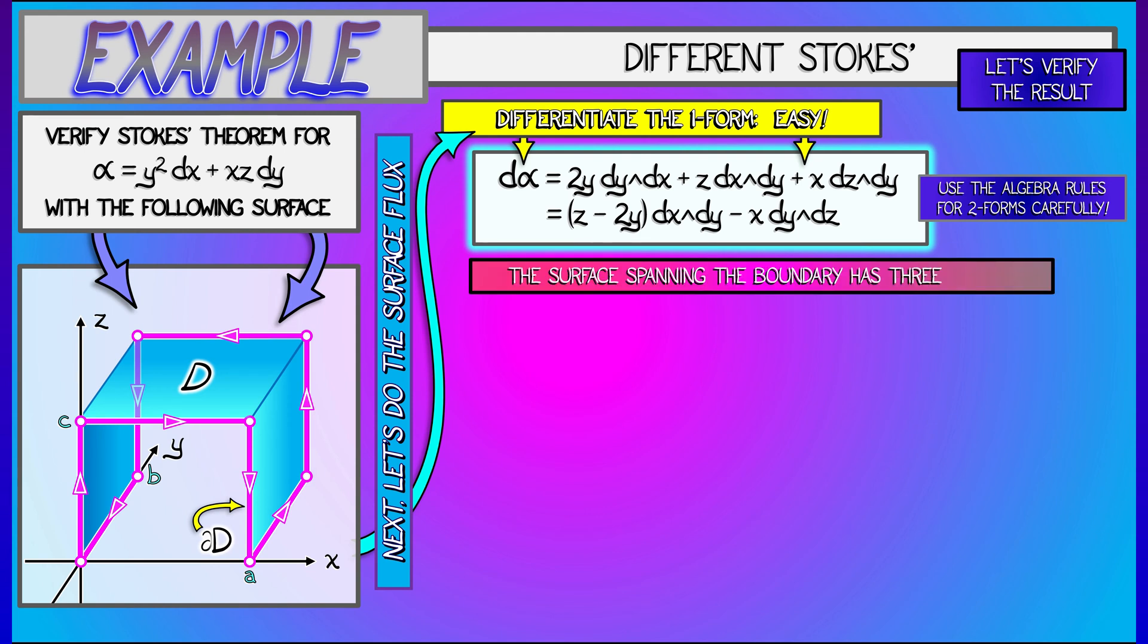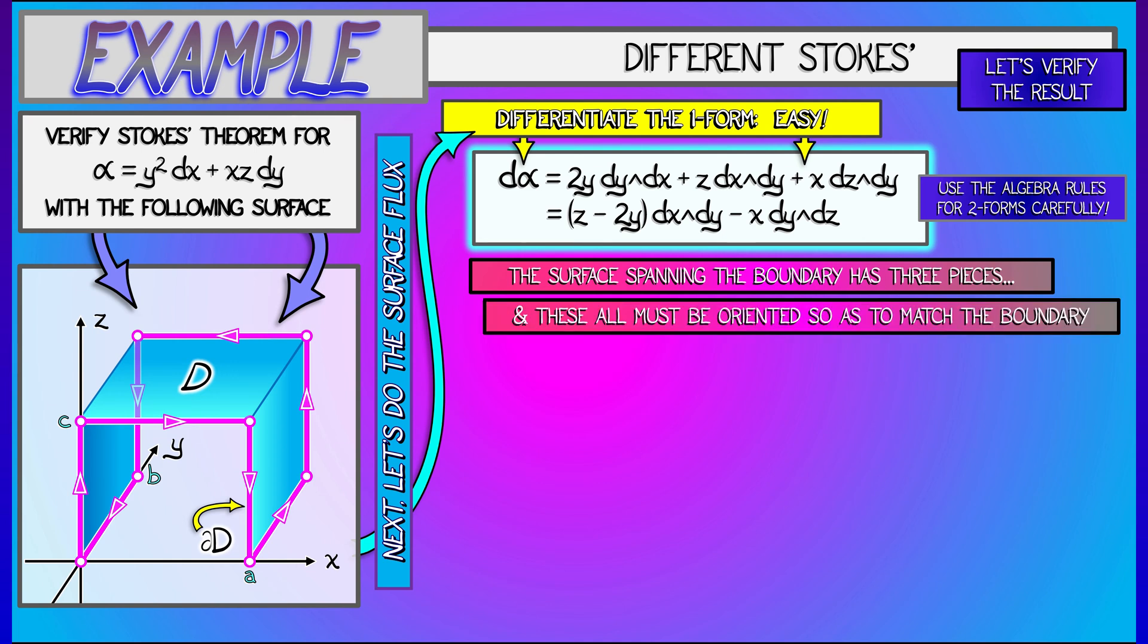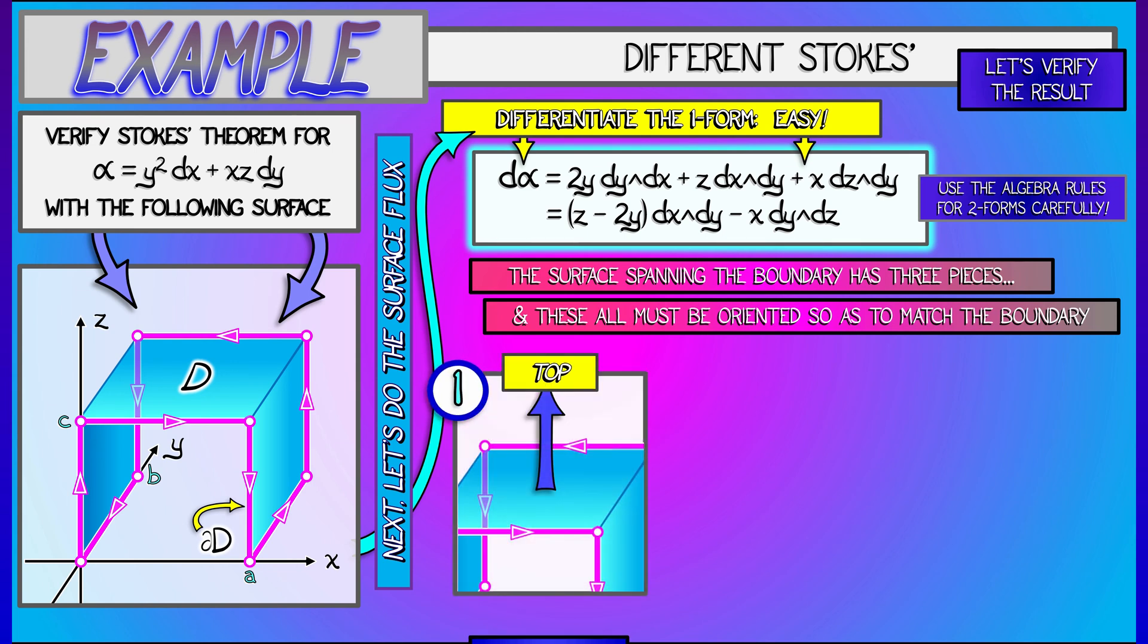Now, I have to integrate this two-form over this surface D. This surface consists of three components. I have to orient this surface properly in order to match the orientation on the boundary. For the top piece, that flat piece on the top, in order to get the orientation right, I'm going to use an upward pointing normal vector.